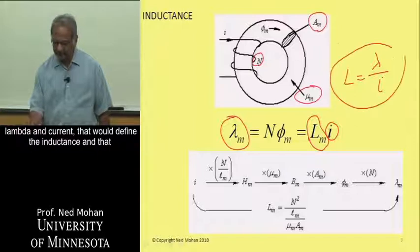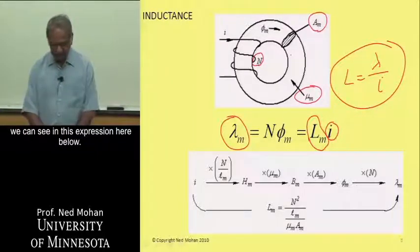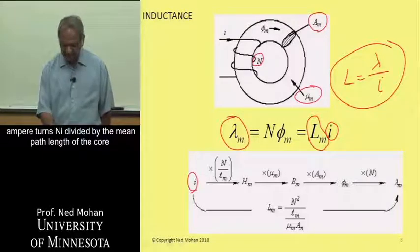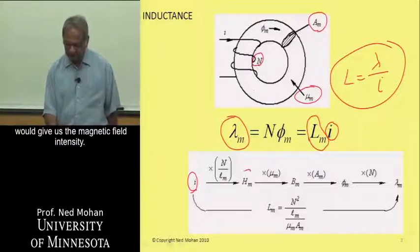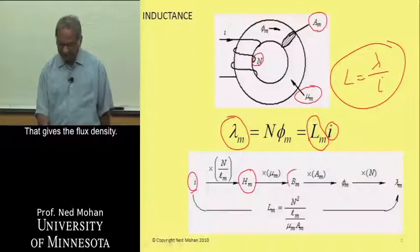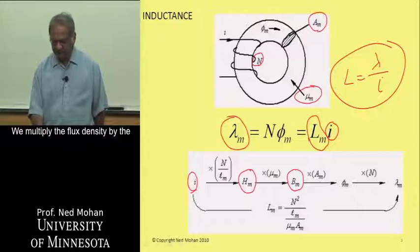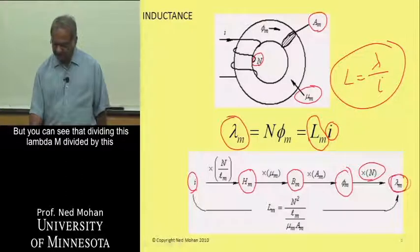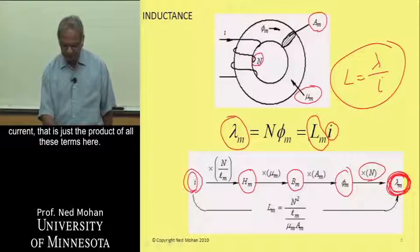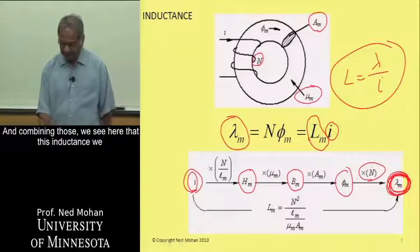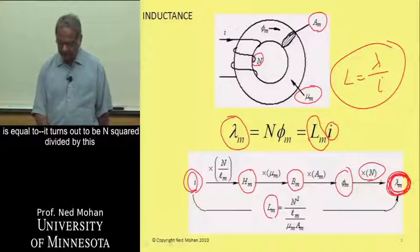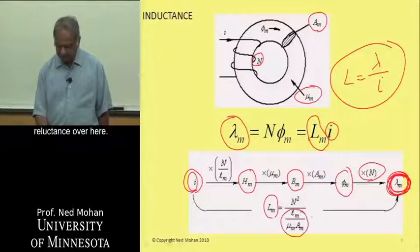The relationship between flux linkage lambda and current defines the inductance. From Ampere's law, N times I divided by the mean path length gives the magnetic field intensity. Multiplying by permeability gives flux density; multiplying by cross-sectional area gives flux; multiplying by N gives flux linkage. So inductance, which is lambda over I, turns out to be N squared divided by the reluctance.